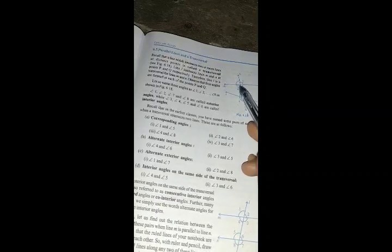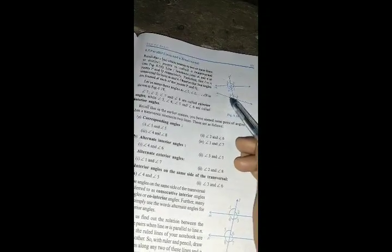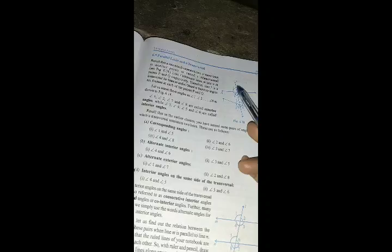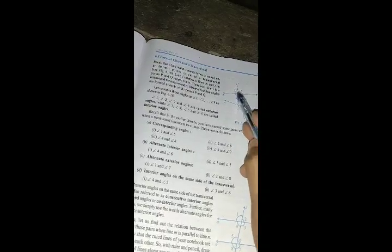Interior alternate angles: angles 4 and 6 are alternate, and similarly 3 and 5 are alternate interior angles.